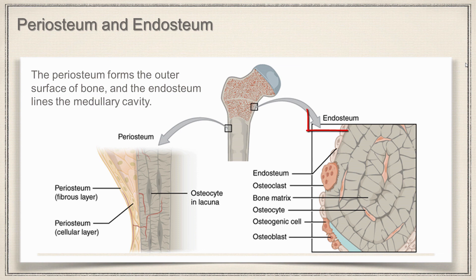Now the endosteum — not the best picture for it here — is shown wrapping around the trabeculae, which are what make up the spongy bone. Probably a better example, though, would be what lines the medullary cavity.